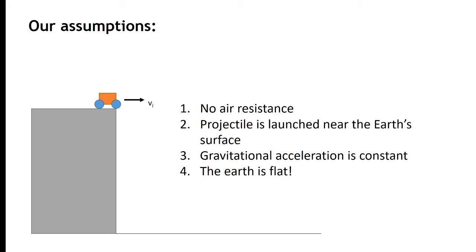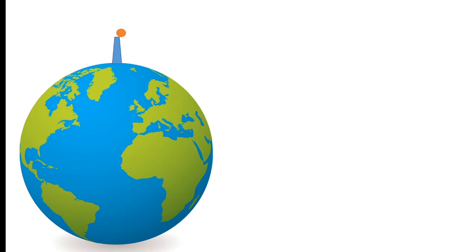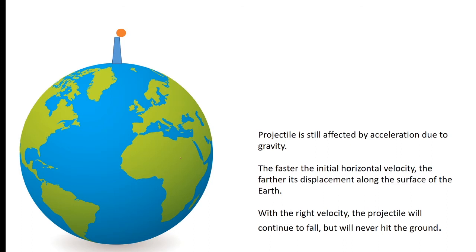But what happens if we launch a projectile with such strong speeds and from such a great height that we can no longer neglect the curvature of the Earth? The projectile is still affected by acceleration due to gravity. The faster the initial horizontal velocity, the farther its displacement along the surface of the Earth. With the right velocity, the projectile will continue to fall but will never hit the ground. The curvature of the Earth plays a significant role in horizontal displacement.